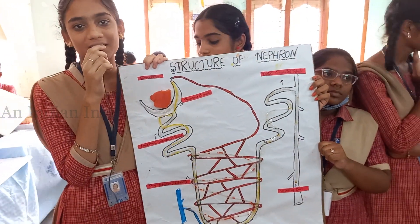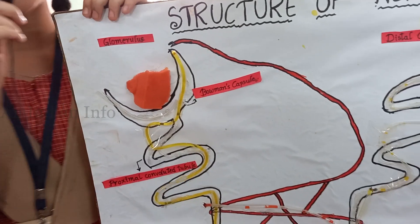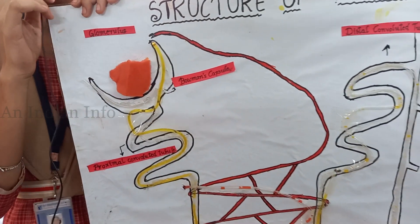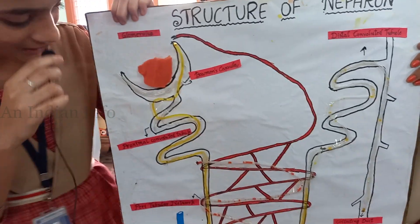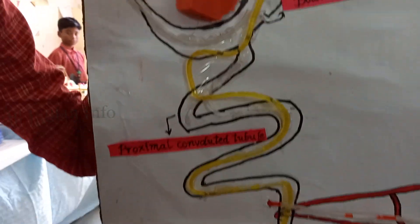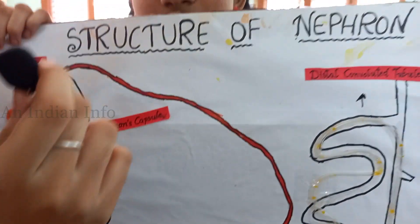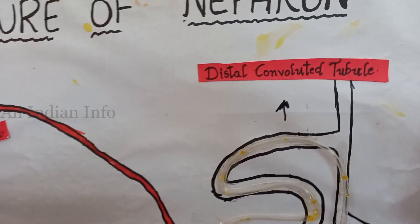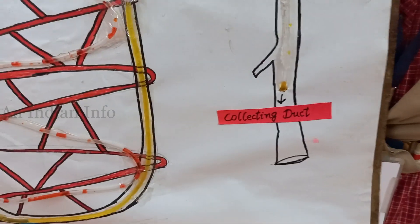The Malpighian body contains two parts. First, glomerulus — glomerulus means it is a bunch of fine capillaries. The Renal body consists of PCT and DCT. This is the PCT. PCT full form is Proximal Convoluted Tubule. And this is the DCT. DCT full form is Distal Convoluted Tubule. And this is called the peritubular network. And this is the collecting duct.